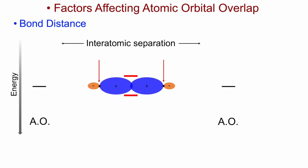Now let's bring the two atoms together. We see a small degree of overlap between the two orbitals. That results, for in-phase overlap, in a small degree of stabilization of the bonding MO, and conversely, for out-of-phase overlap, a corresponding small degree of destabilization of the anti-bonding MO.